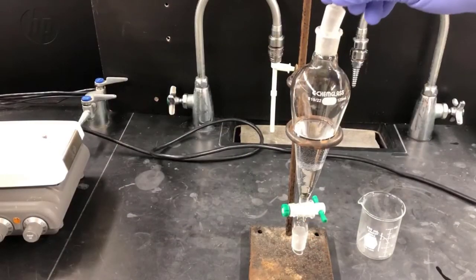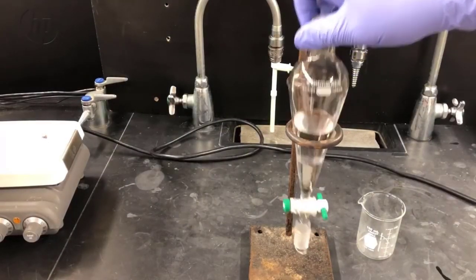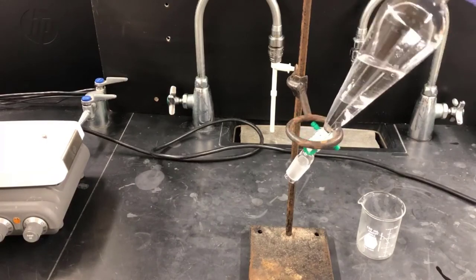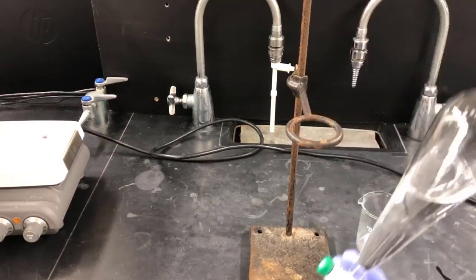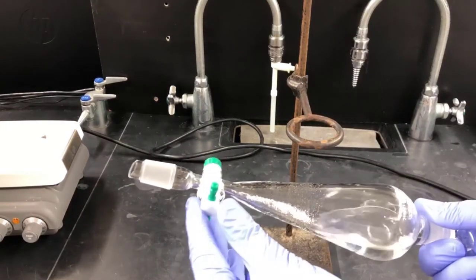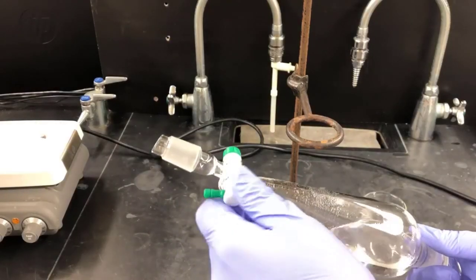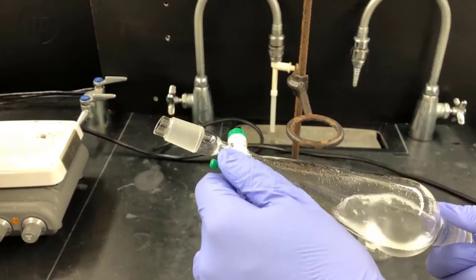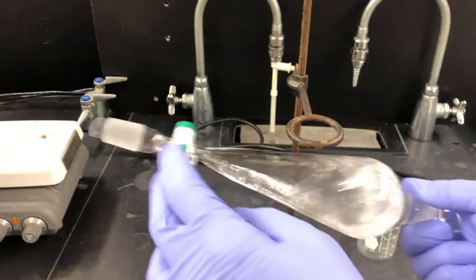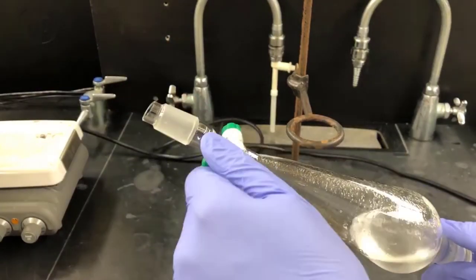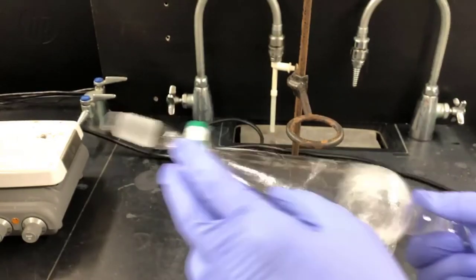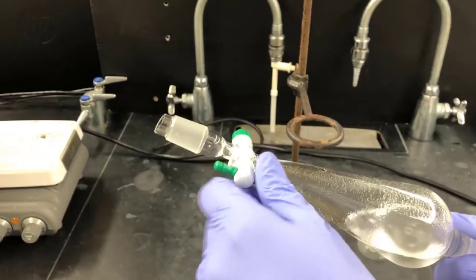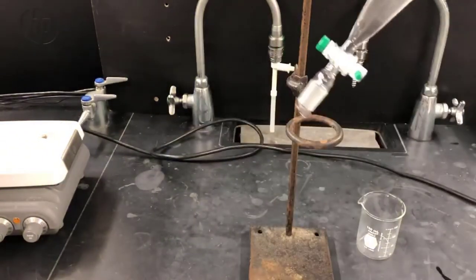Now I'll need to shake the separatory funnel to allow the phases to co-mingle. I'll put a stopper in the top, I'll pull it out of its ringstand support, and I'll shake it, inverting it and venting it periodically to release pressure from gases that build up inside. So I give it a shake, and then I invert it and vent it. I'll do this a few times, and then I'll put it back on its ringstand support to allow the phases to separate.